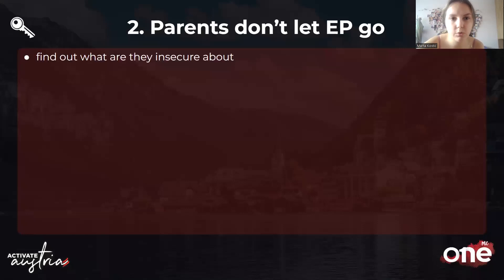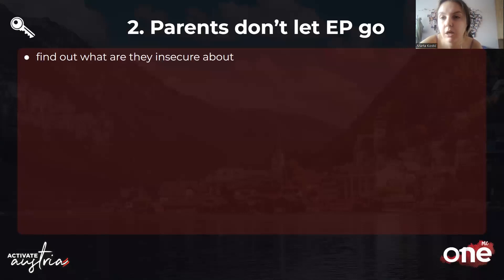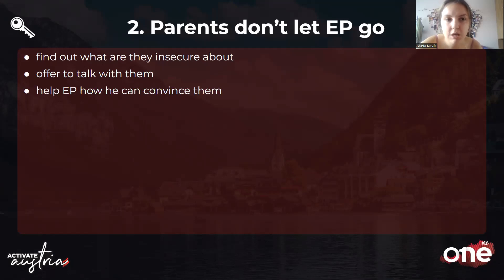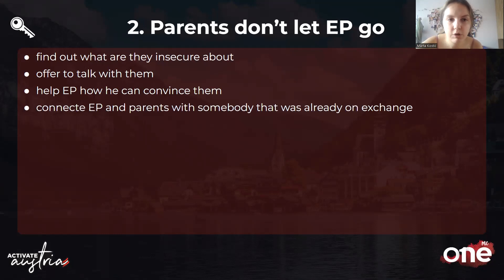Objection number two: parents don't let EP go. First, find out what they're insecure about — talk honestly with EP and ask: is it because parents don't trust us as an organization? Do they think it's a waste of time or too expensive? Then offer to talk with the parents directly if they're more comfortable speaking with someone from the organization — I've done this myself as an OGX member. Also help EP figure out how to convince their parents, what reasons to give, and how to build their trust.